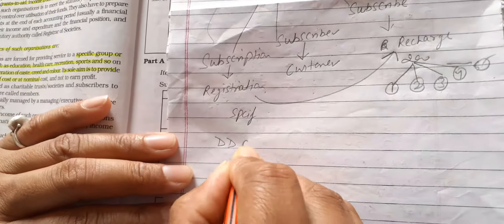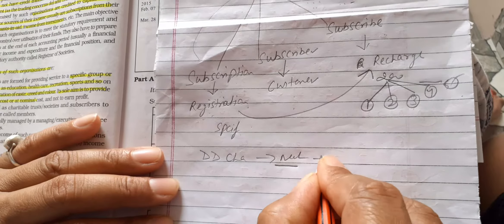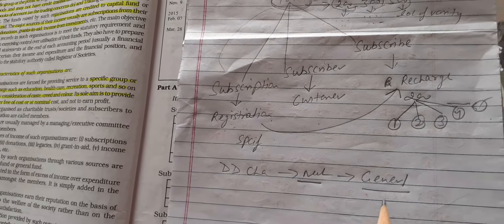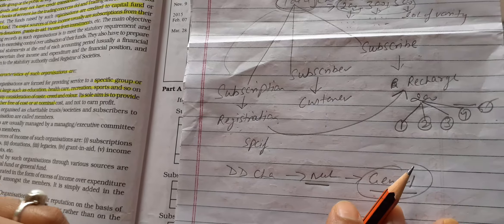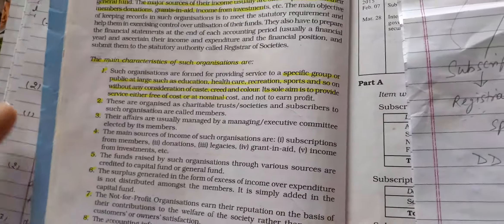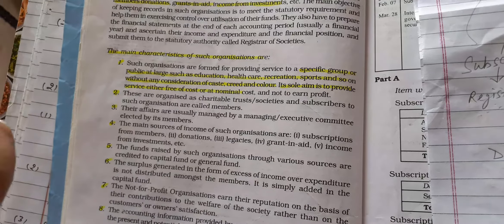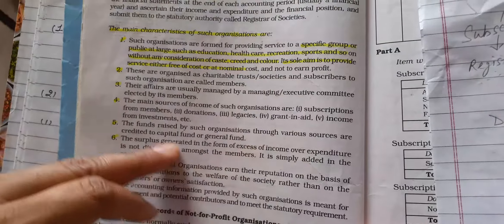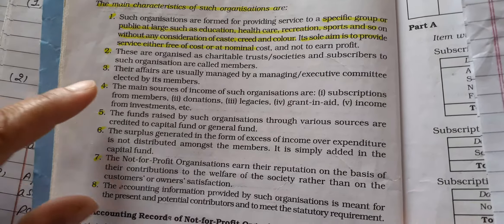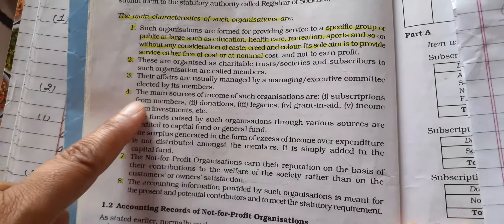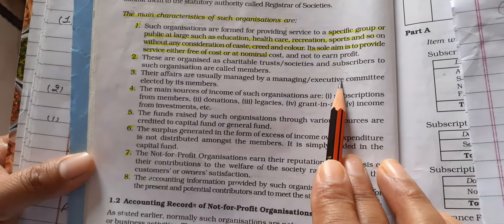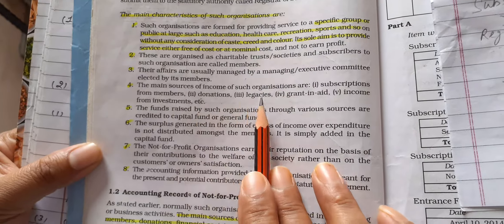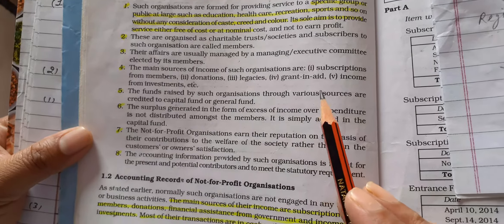So not-for-profit organizations provide their services to either a specific group or the general public. These organizations are organized as charitable trusts, working on donation or fund-based models. They are usually managed by a managing or executive committee that appoints members to manage and control the organization. The main sources of income include subscription from members, donations, legacies, grants, and income from investments, among other sources.